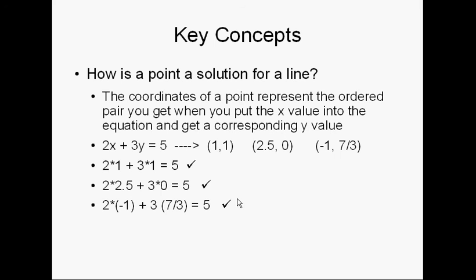and we graph it, we get a line. The reason we get that line is because all of these points on that line are possibilities of things that make it true.